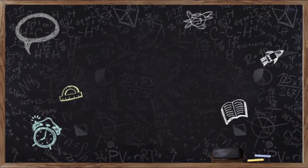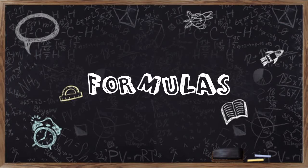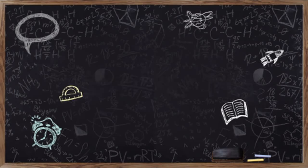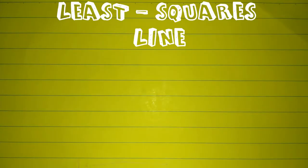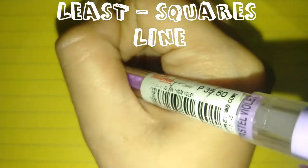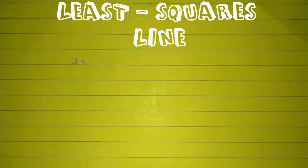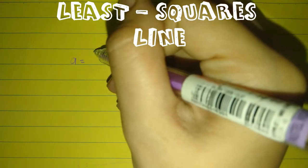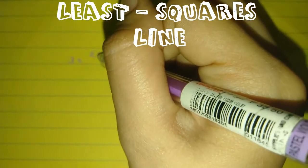The following are the formulas in solving the equation. The formula of the least squares line: a is equal to the summation of xy minus the summation of x multiplied by the summation of y, all over n multiplied by the summation of x squared minus the summation of x squared.